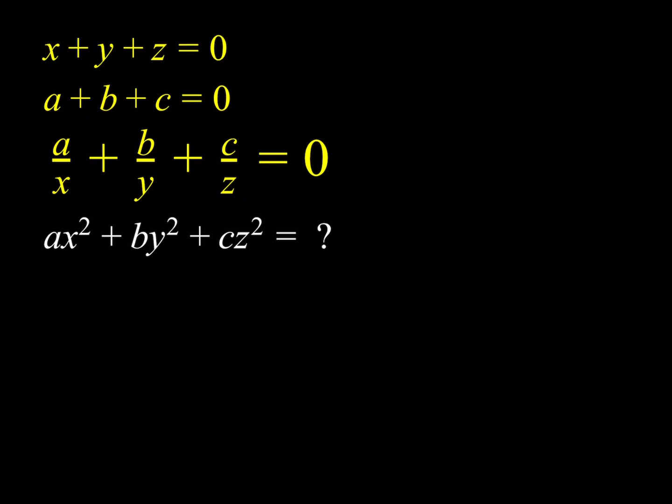Now, if you look at this equation carefully, you're going to notice that there are six different variables. But they are somewhat related — there is some relationship between these variables. For example, x plus y plus z is equal to 0, so their sum is 0, meaning not all of them can be positive or all negative. There are some restrictions. Suppose these are real numbers — how could we find the value of ax squared plus by squared plus cz squared based on the givens? That's what we're going to do.